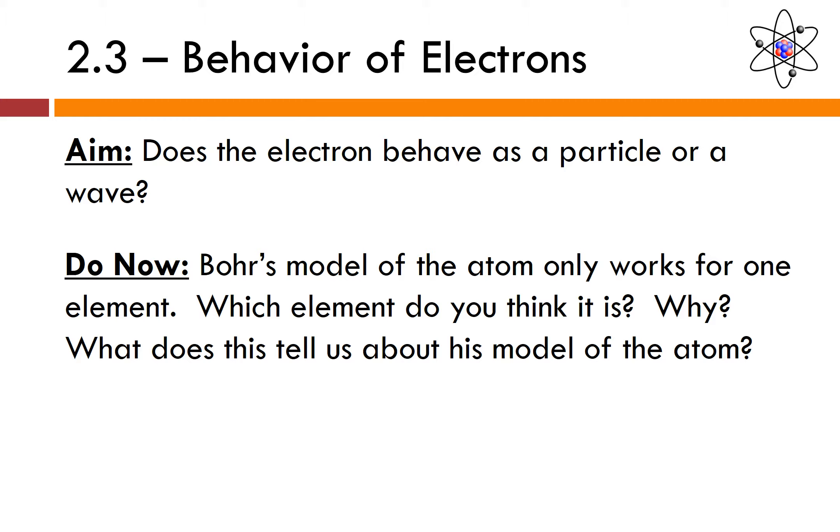Let's take a look at the do now. Bohr's model of the atom only works for one element. Which element do you think it is and why? What does this tell us about his model of the atom?